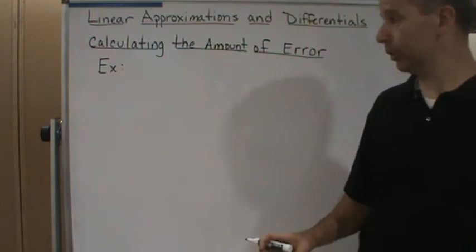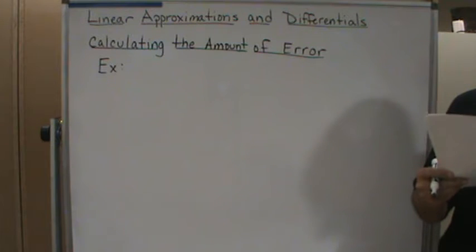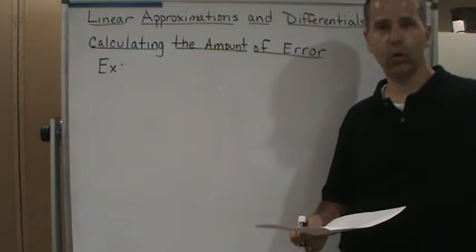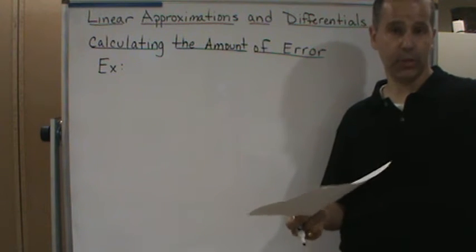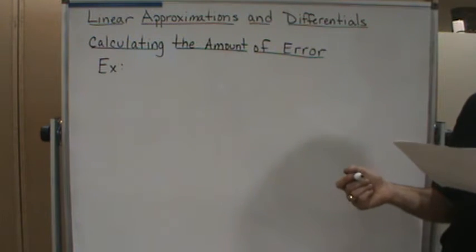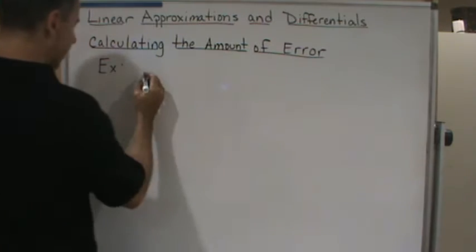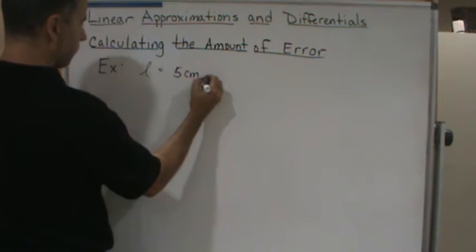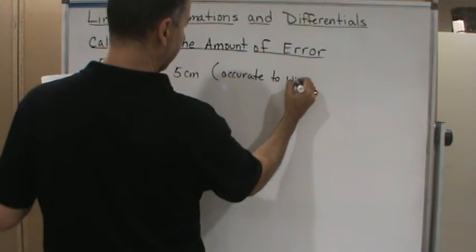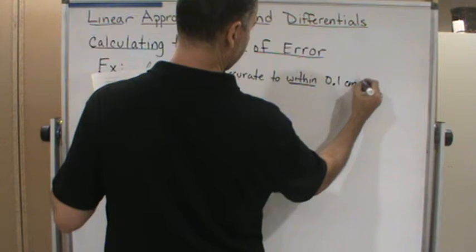Welcome back. Now we're going to do an example — we're going to find the volume of a cube. Suppose the side length of a cube is measured to be 5 centimeters with an accuracy of 0.1 centimeters. We're using calipers to measure the length of one of the sides, and it measures to 5 centimeters, but we know the calipers are accurate to within one-tenth of a centimeter.